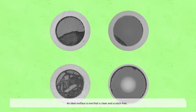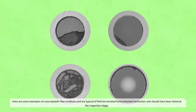An ideal end face is one that is clean and scratch-free. Here are some examples of unacceptable fiber end faces that are typical of field-terminated hand-polished connectors and should have been failed at the inspection stage.